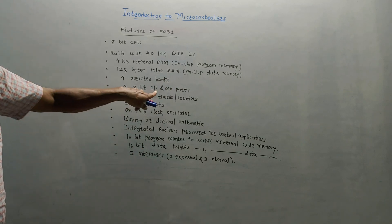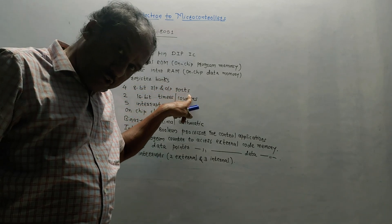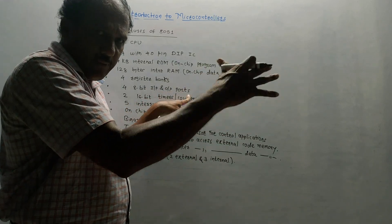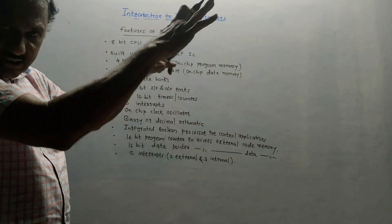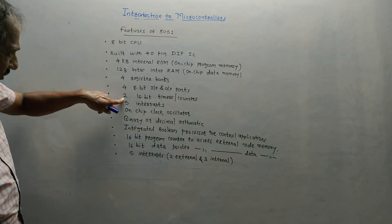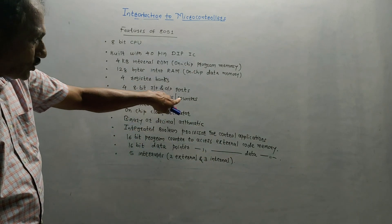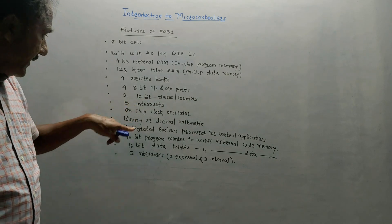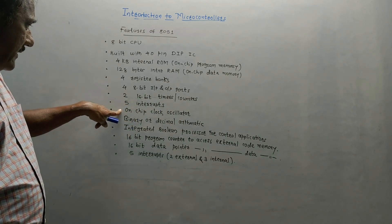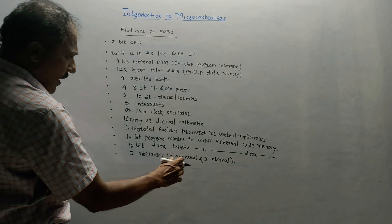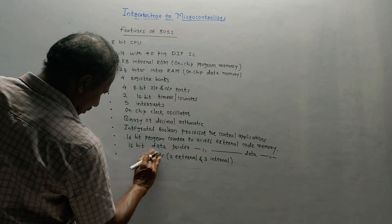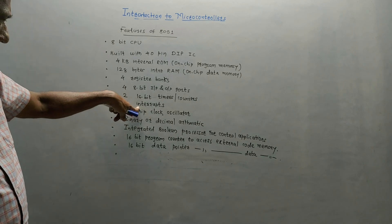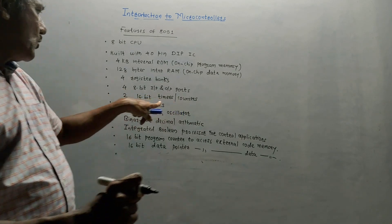There are 4 eight-bit input and output ports. We will discuss the function of each and every pin while studying the pin configuration. It has two 16-bit timers or counters. It makes use of five interrupts — two external and three internal interrupts.